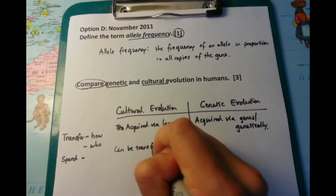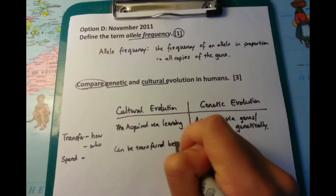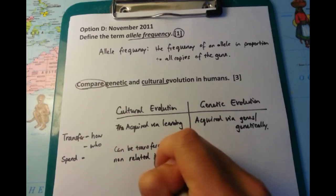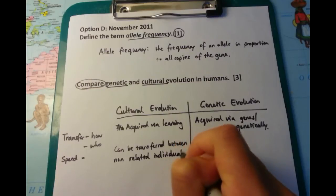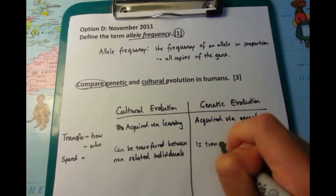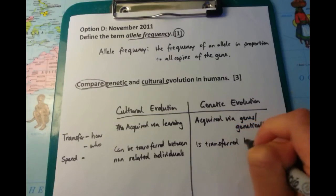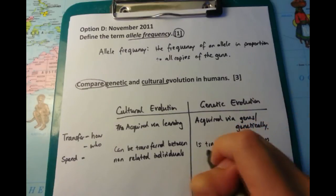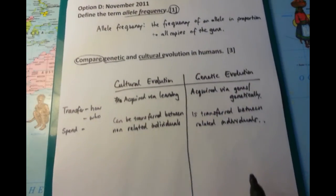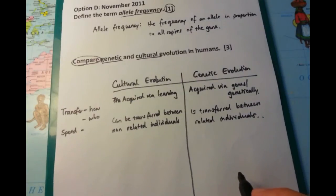After we've talked about how, let's talk about who. Cultural evolution can be transferred from individual to individual, and they don't have to be related. For example, if you read a book, you don't have to read your mother's book. You can read any person's book and still gain that knowledge, which is essentially cultural evolution. This is as opposed to genetic evolution, where if you wanted to get genes from a particular person, you'd have to be related to them.